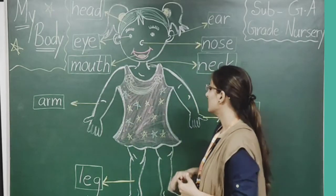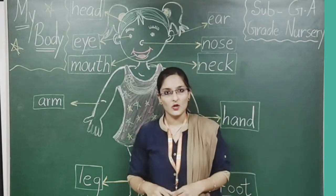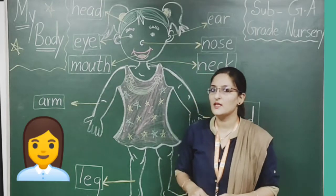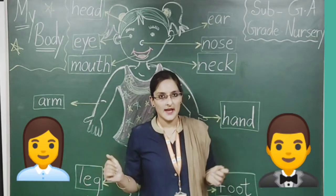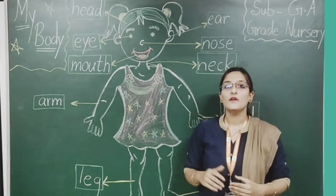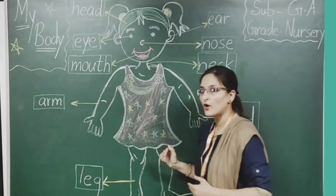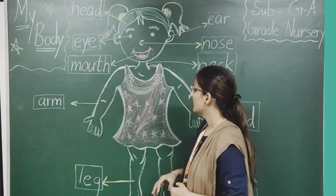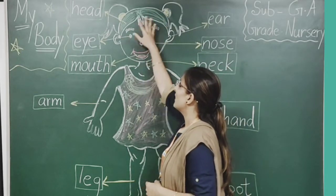Have a look at the board. We have a picture of a girl here. Yes students, you know this — it's a girl. So this is a picture of a girl. Now we will recognize parts of the body through this. Okay? Have a look here.